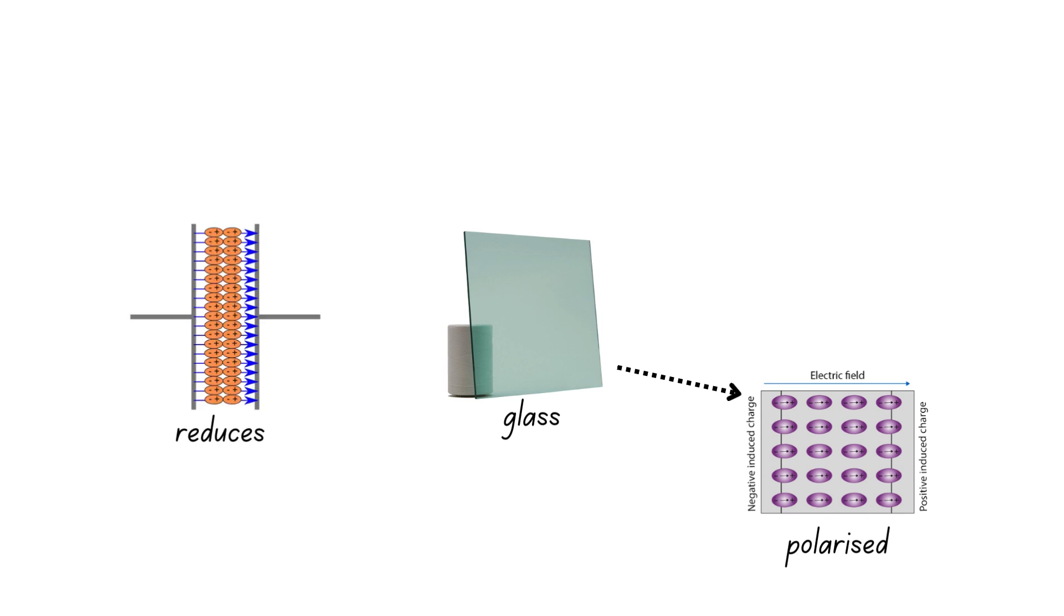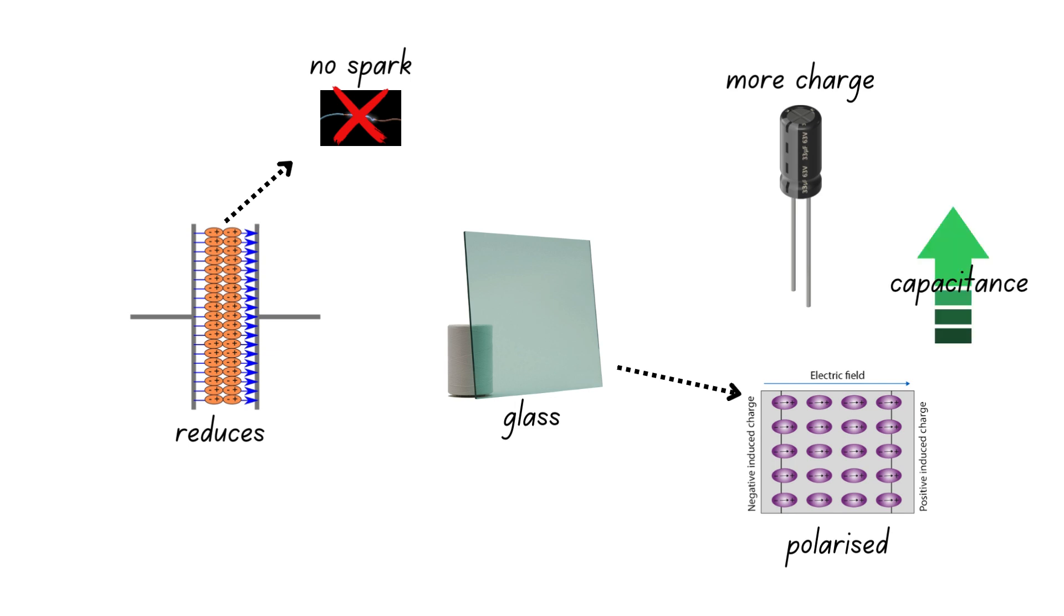If you use another material such as glass, its molecules get polarized by the electric field thus creating some induced charges of the opposite polarity on each plate glass interface. This reduces the overall electric field strength between the plates, thus preventing a spark from occurring. This now means the capacitor can hold more charge per given voltage. Thus, its capacitance is considered to have been increased.